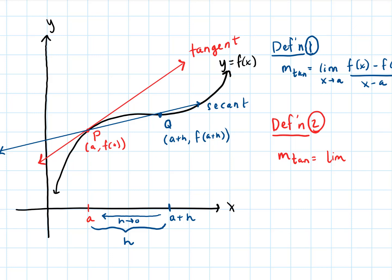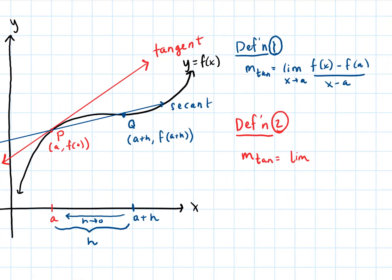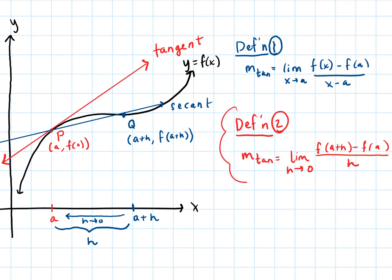So our slope of the tangent line becomes the limit of the slope between those two points: the difference in the y's, f of a plus H minus f of a, all over a plus H minus a. When we take a plus H minus a, the a's cancel, and that is just H. So we're taking the limit of that slope as H goes to zero. That is our new definition for the slope of a tangent line, or the instantaneous rate of change of a function at a point P defined as a, f of a.